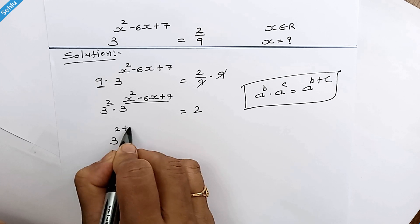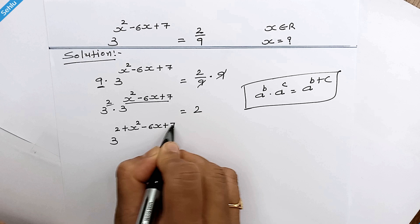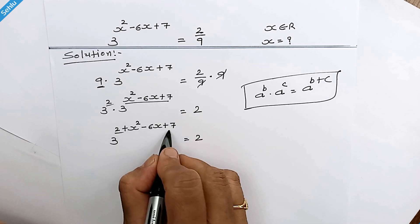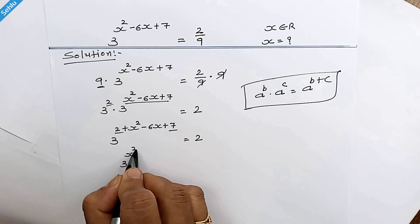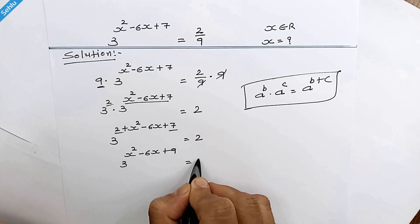3^(2 + x² - 6x + 7) equals 2. So it will be 2 plus 7 is 9, giving us 3^(x² - 6x + 9) equals 2.